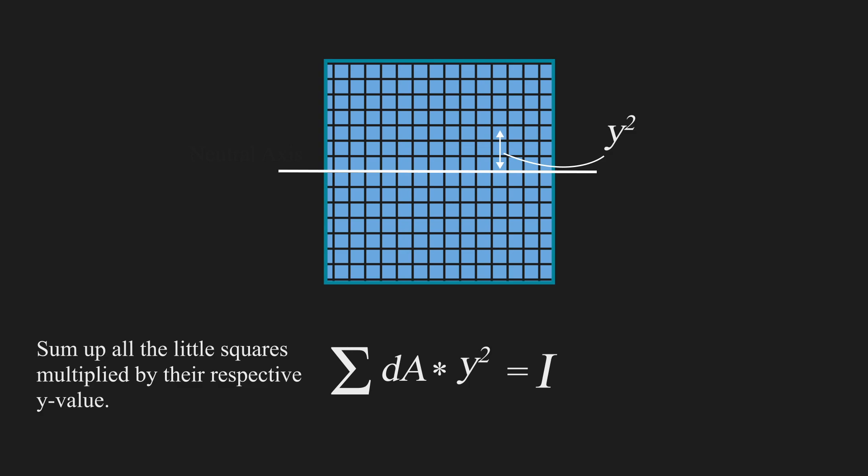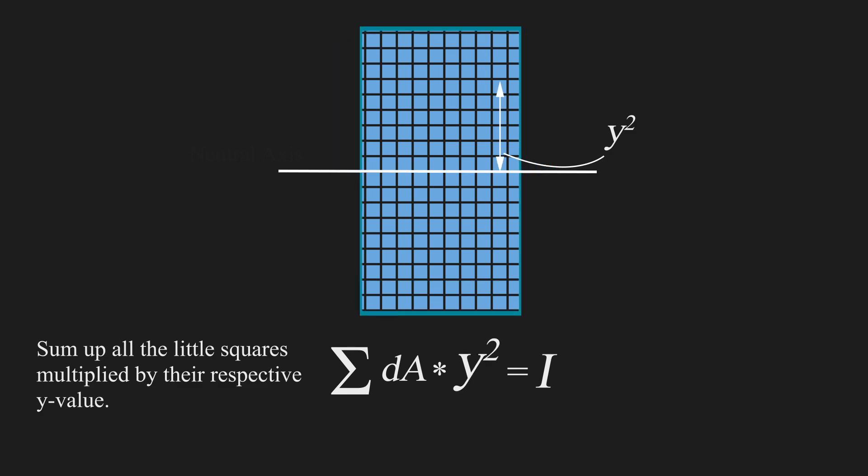Since y is squared, if we distribute area further from the neutral axis, we can have a higher moment of inertia.